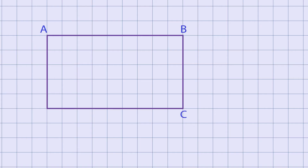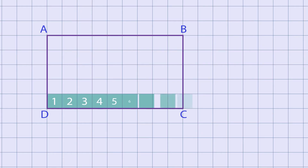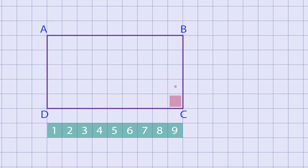For example, ABCD is a rectangle in this square grid. Here, AB is the length and BC is the width of the rectangle. There are 9 squares along the length AB, and 5 squares along the width BC.